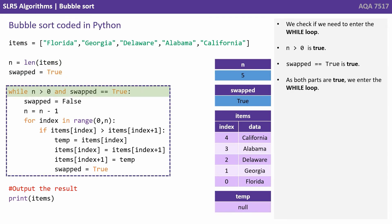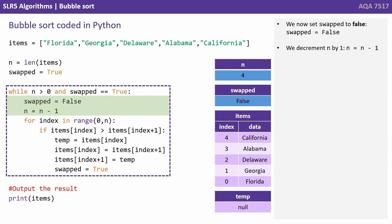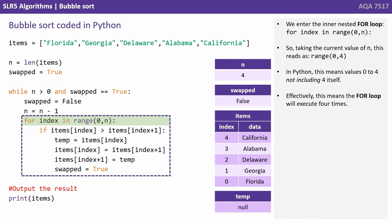We check if we need to enter the while loop. n is greater than zero is true, swapped equals true is true — as both parts are true we enter the while loop. We now set swapped to false and decrement n by one, so n equals four. We enter the inner nested for loop for index in range 0 to n. Taking the current value of n, this reads as range 0 to 4. In Python this means values 0 to 4 not including 4 itself, so effectively the for loop is going to execute 4 times.